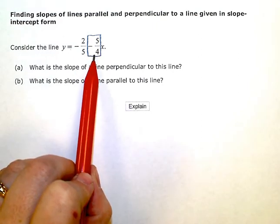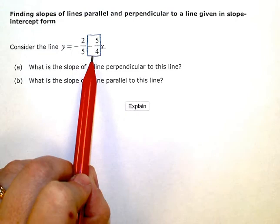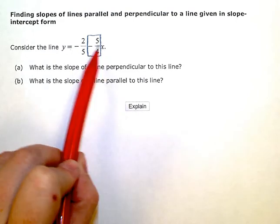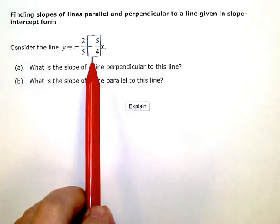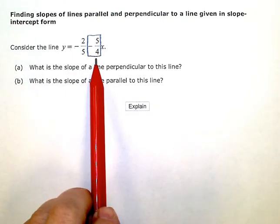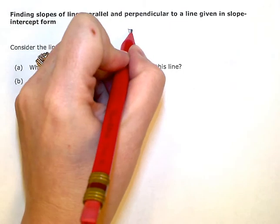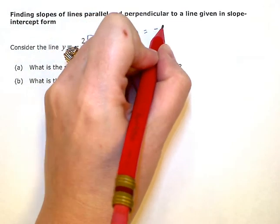Sometimes we talk about y equals mx plus b form. This is the mx. There's the b. So they've kind of flip-flopped the terms here, but my slope is negative 5 fourths. So I'm going to write m equals negative 5 fourths.